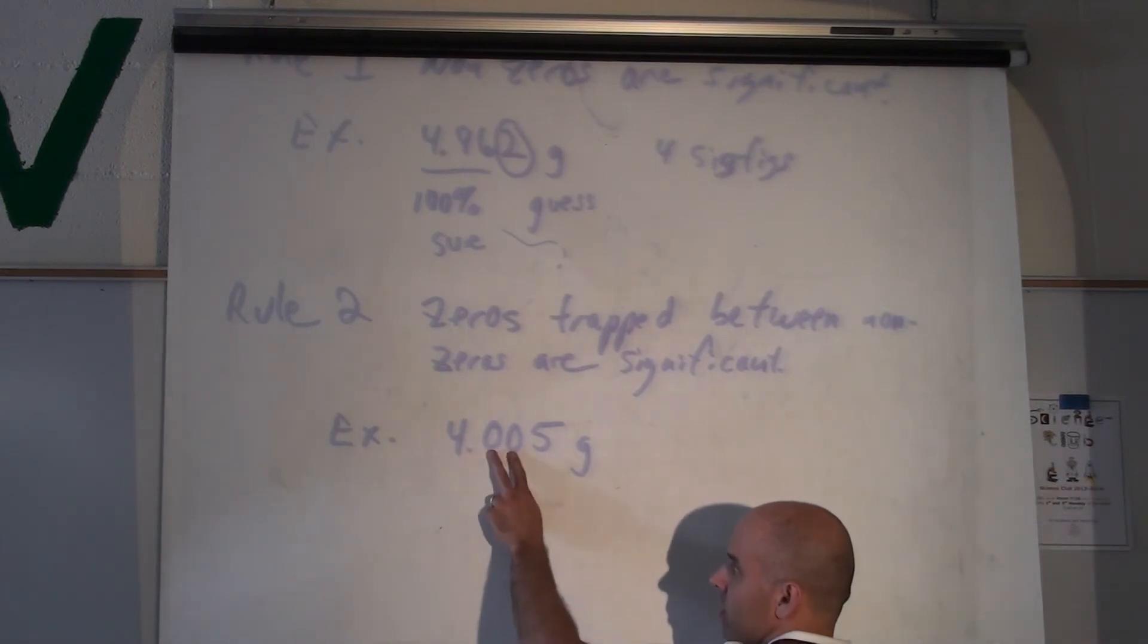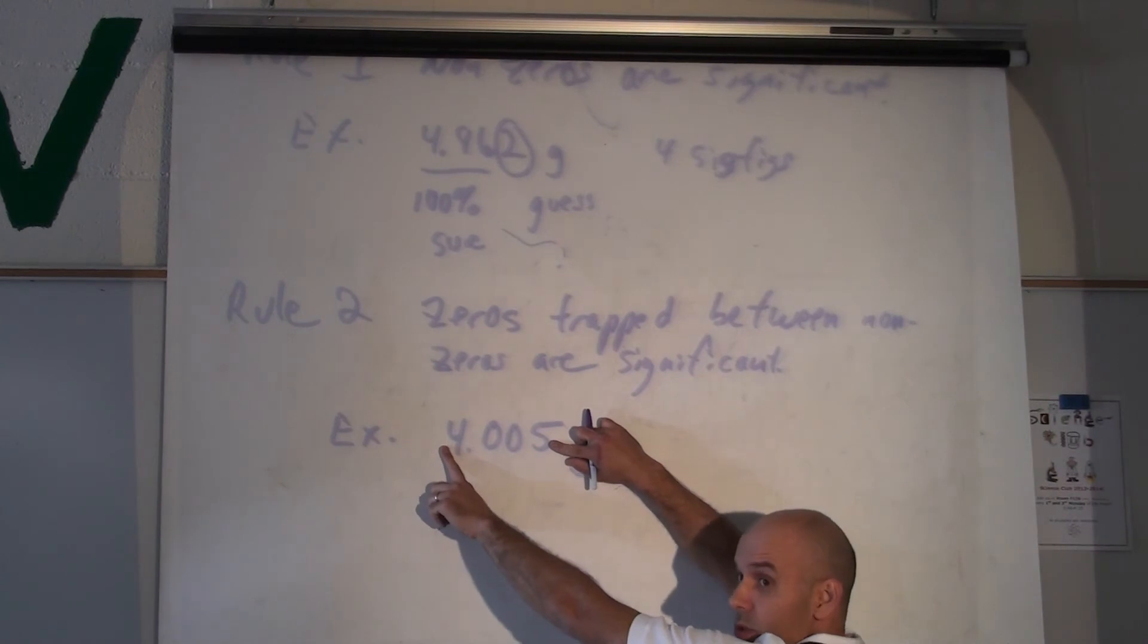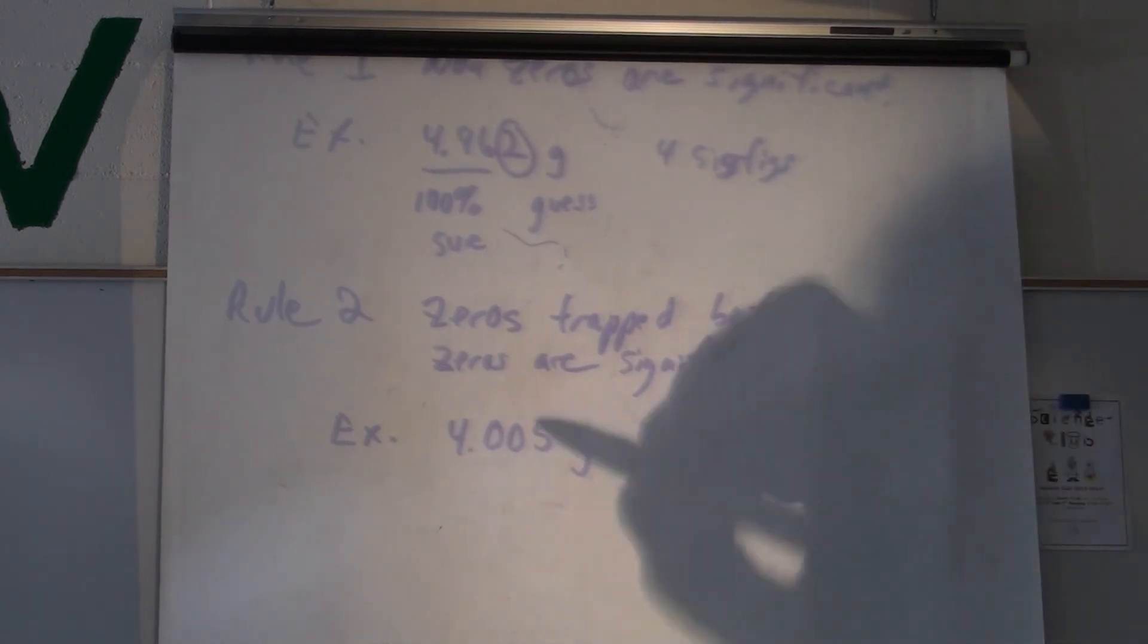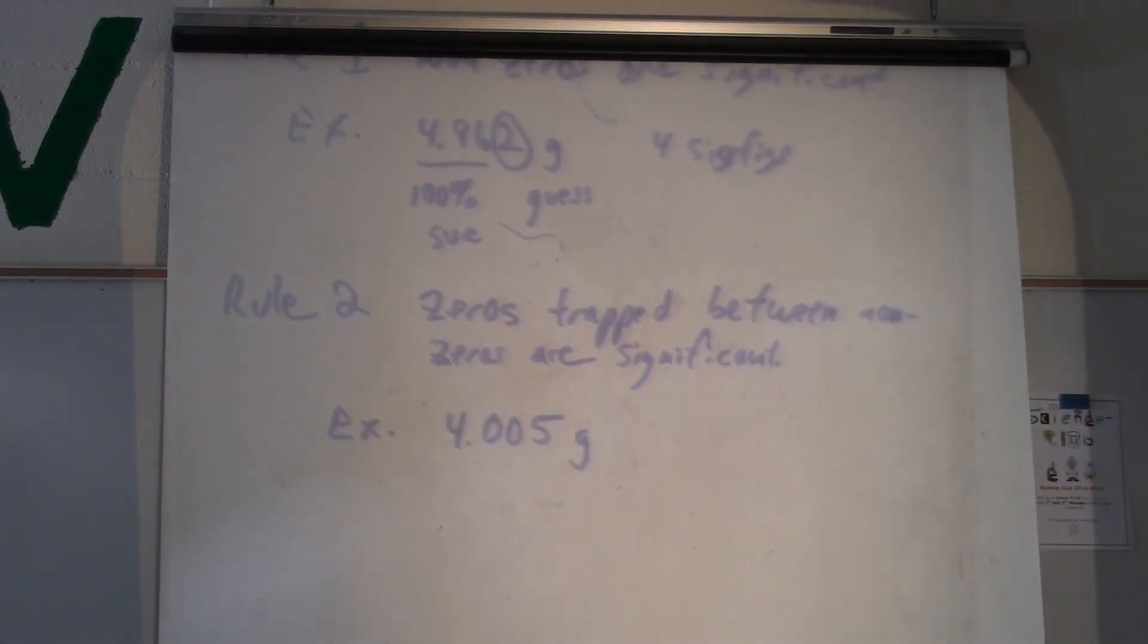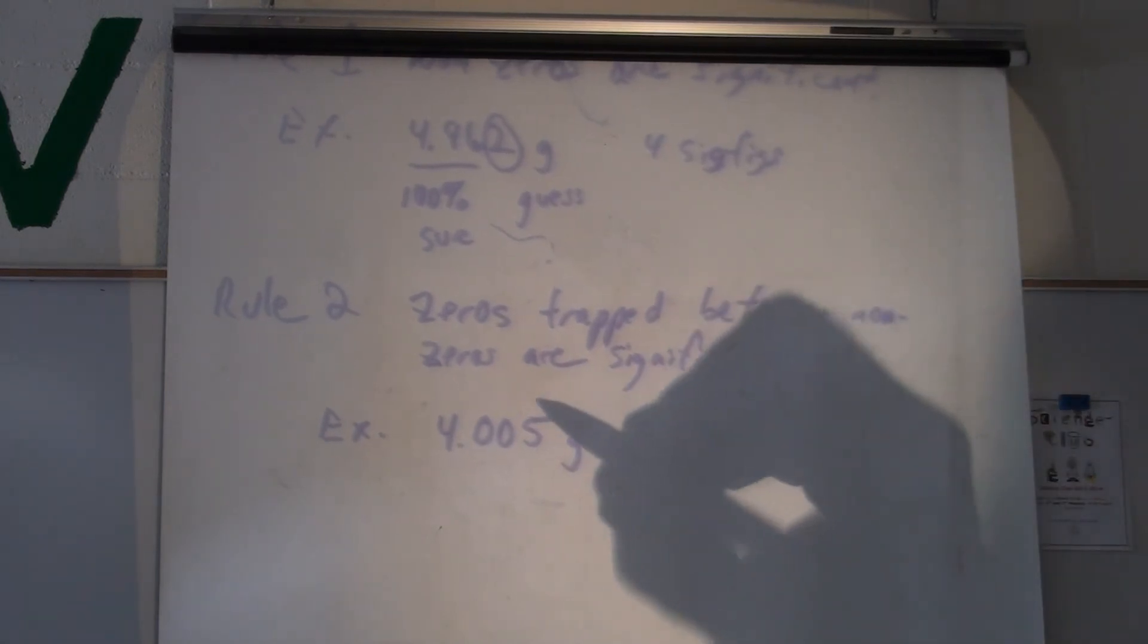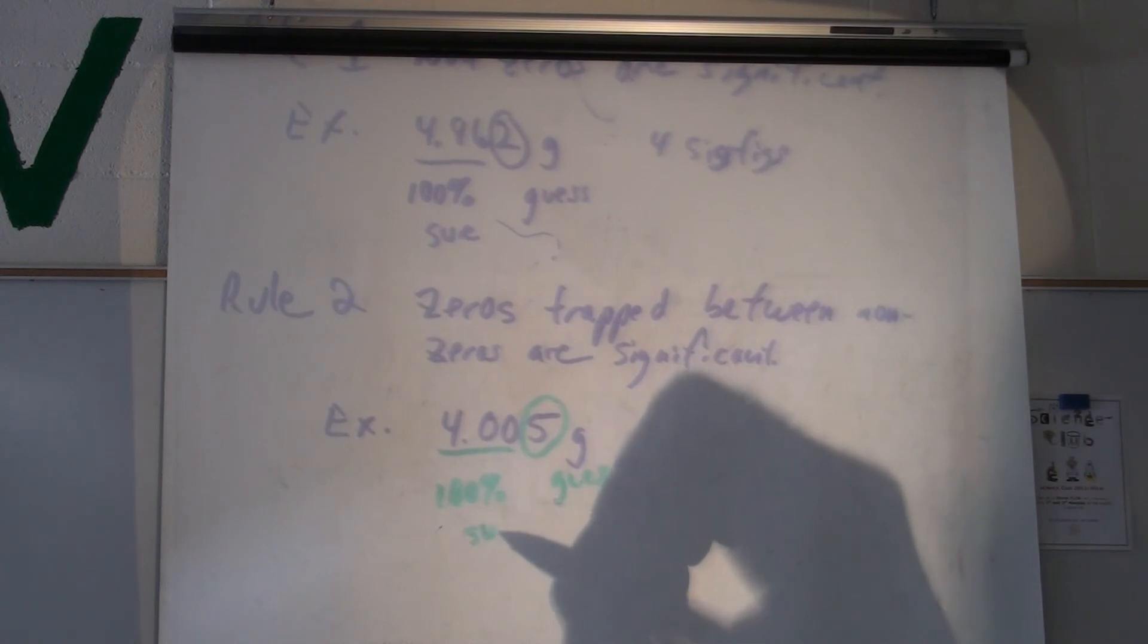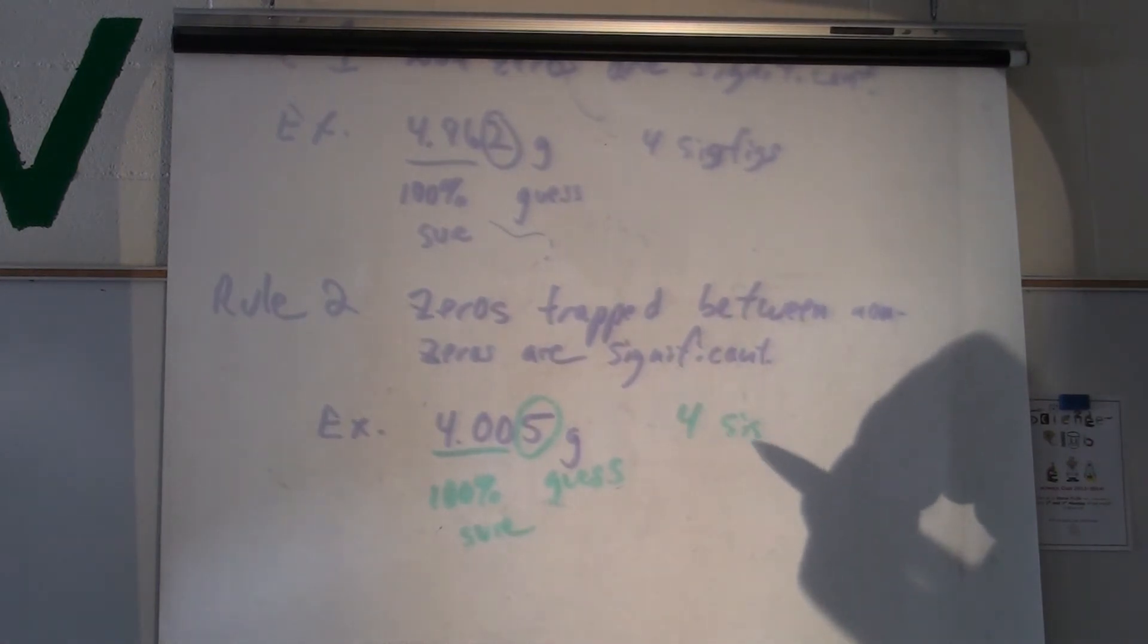So these two zeros, Mitchell, are trapped between two non-zeros. So if they're trapped between two non-zeros, they are significant. And therefore, the five is your guess. These three we're sure about. We have a total of four sig figs.